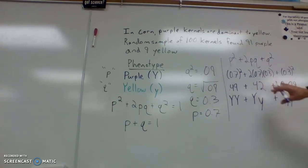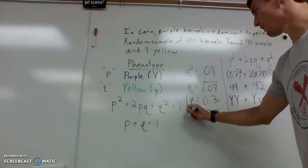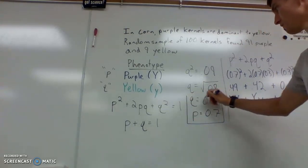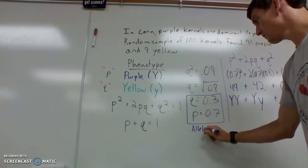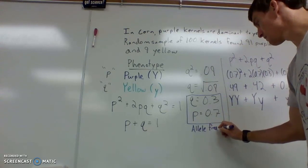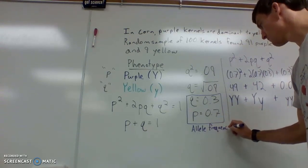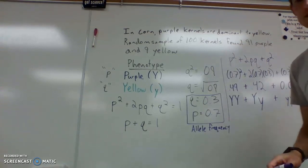So this is showing you the genotypic frequency of this particular example. And the allele frequency is p = 0.7 and q = 0.3. If you have any questions on this, let me know.